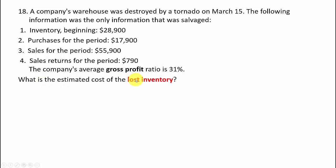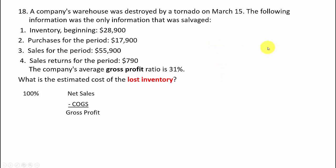What is the estimated cost of lost inventory? Given all these pieces, you can figure out the lost inventory, which is really the same thing as the ending inventory that should have existed before it was destroyed by the tornado. Net sales minus cost of goods sold equals gross profit — net sales is 100%, gross profit is 31%, so cost of goods sold percentage is 69%.